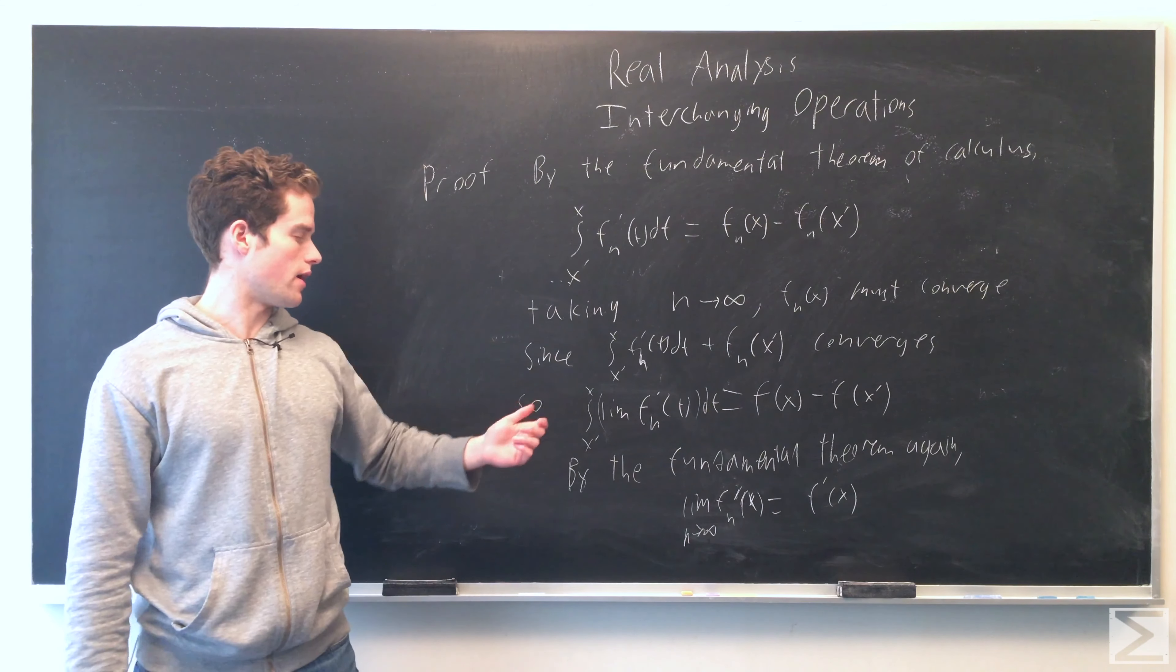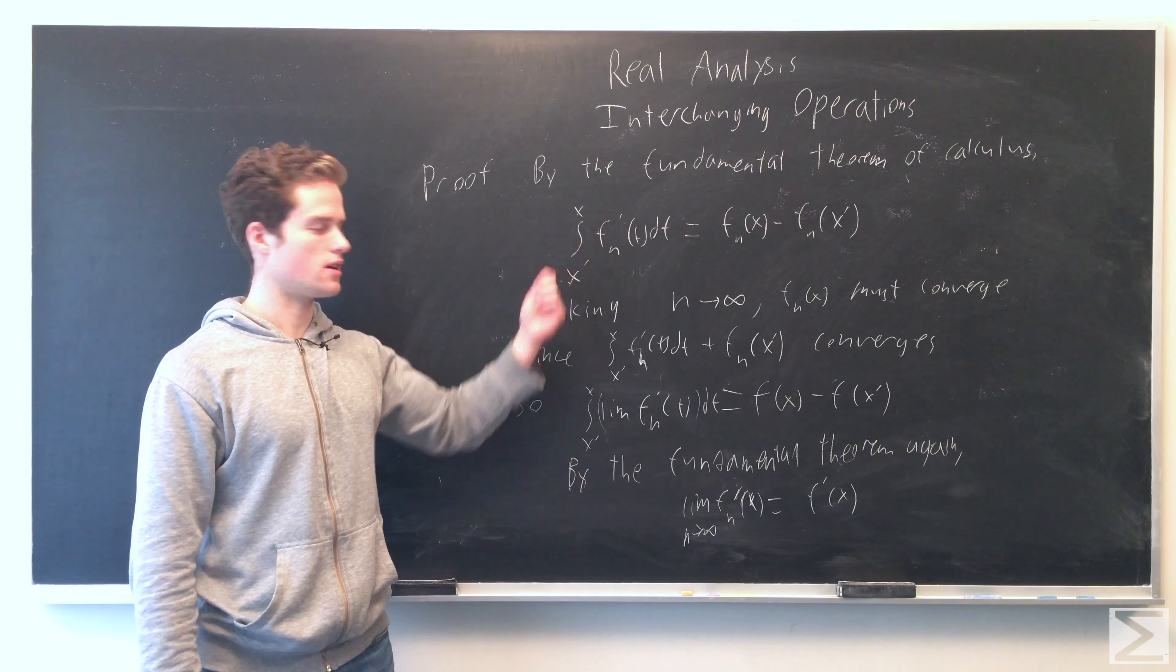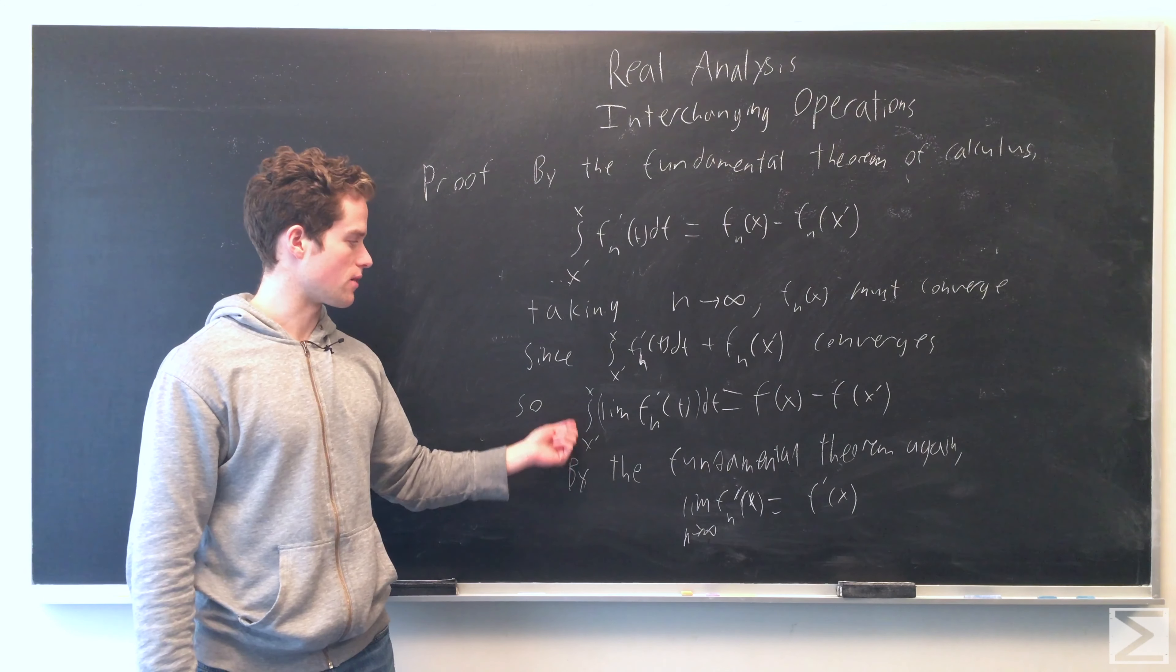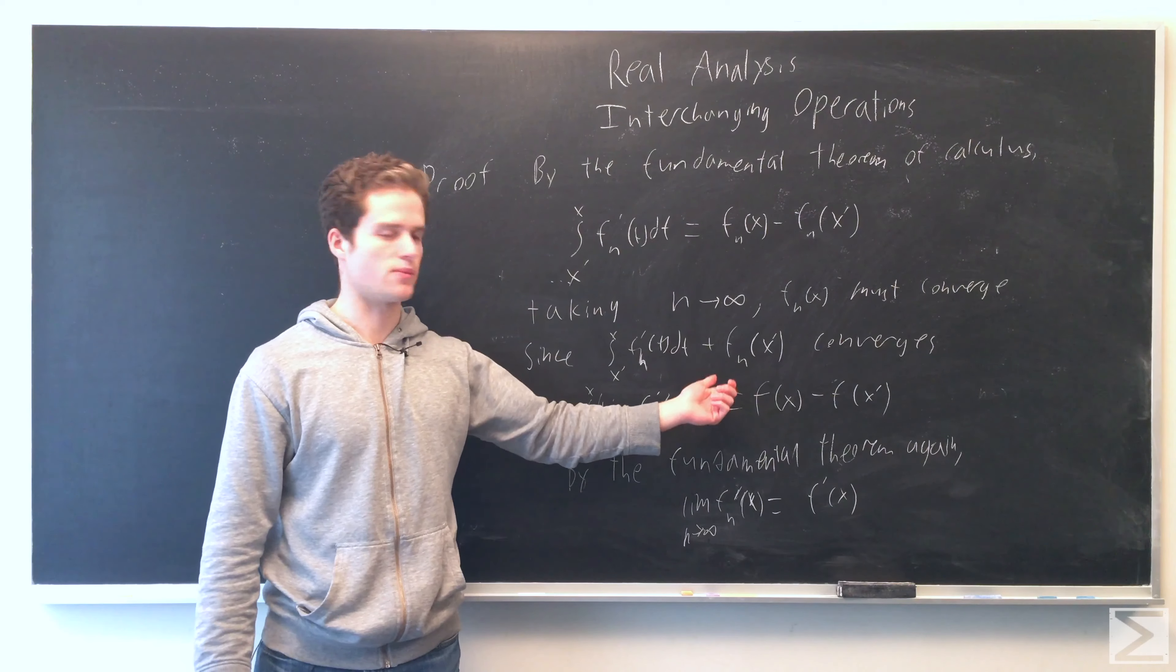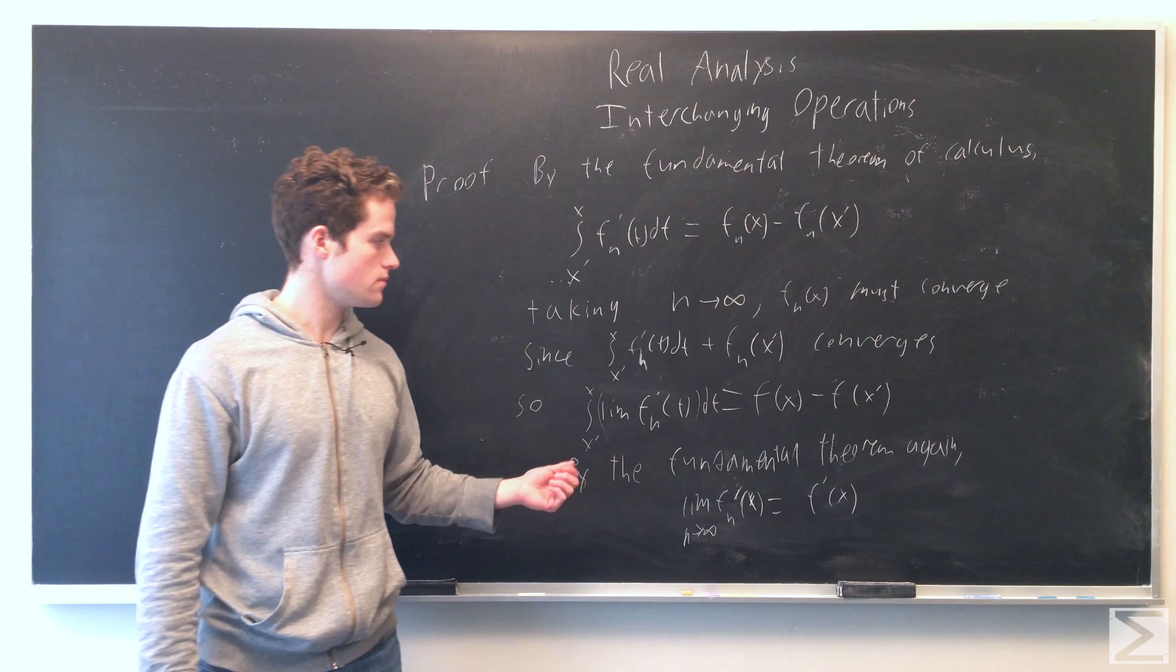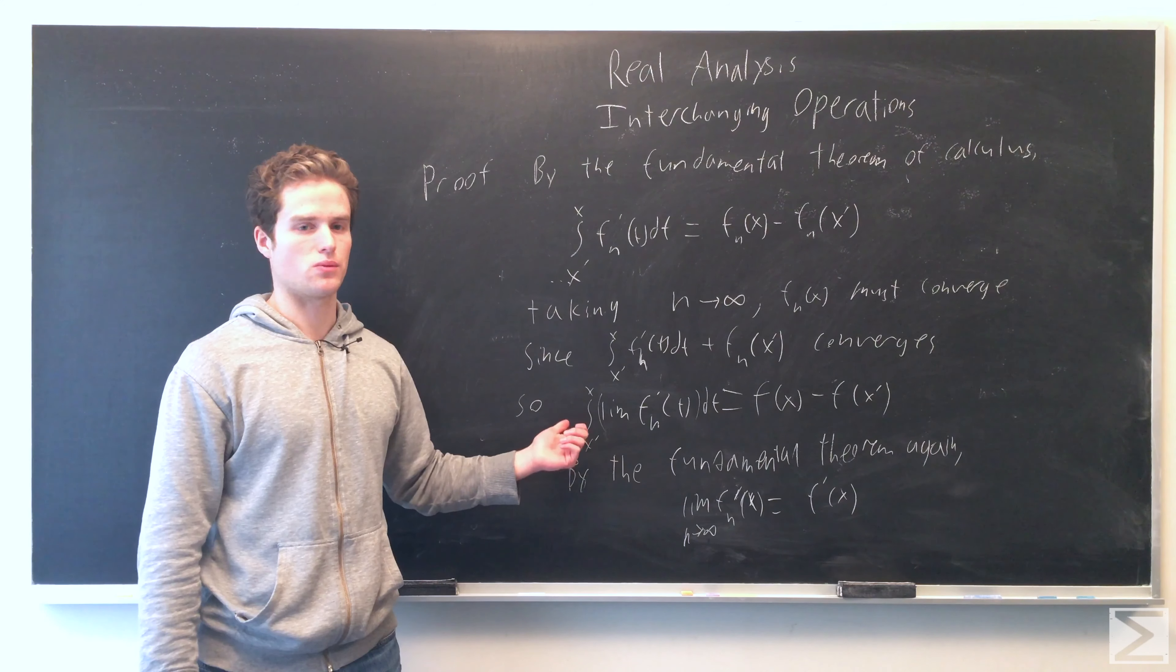And then we take the limit of everything and we switch the integral and limit on the left side, and we get the integral from x' to x of limit f_n' equals f(x) minus f(x'). f(x) is just our limit now, and using the fundamental theorem of calculus one more time, we see the limit of f_n'